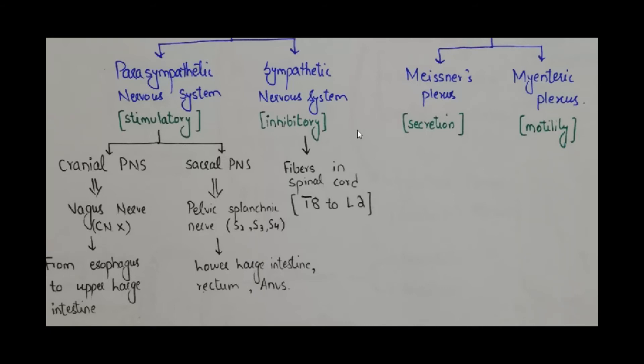The sympathetic nervous system, which is primarily inhibitory to the GI tract, constitutes fibers in the spinal cord from thoracic 8th vertebra to 2nd lumbar vertebra.